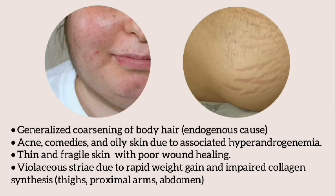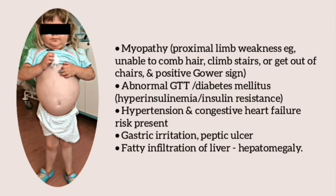Lipomatosis is also commonly present. These children have generalized thinning of body hair, especially in endogenous causes. Acne, comedones, and oily skin are present due to hyperandrogenemia. There is thin and fragile skin with poor wound healing. Violaceous striae are present due to rapid weight gain and impaired collagen synthesis, and are particularly found on the thighs, proximal arms, and abdomen.